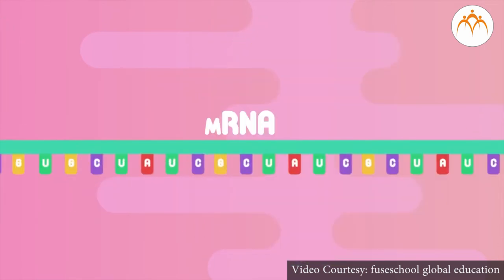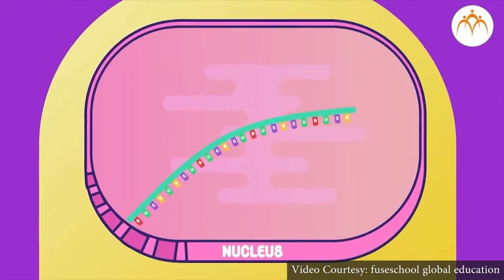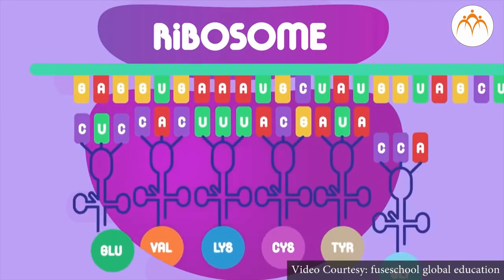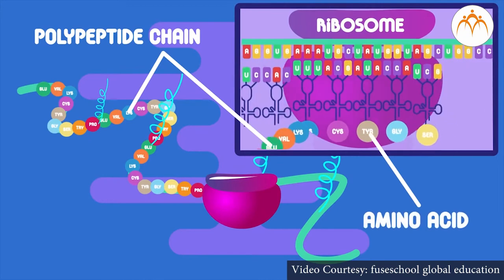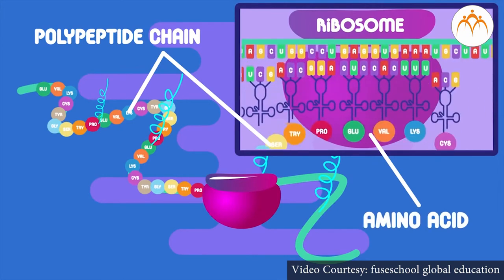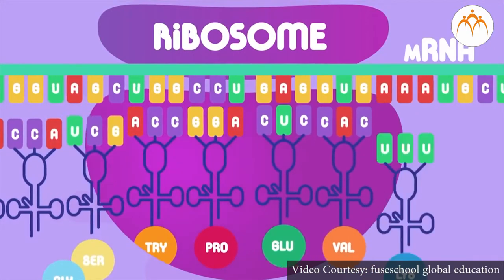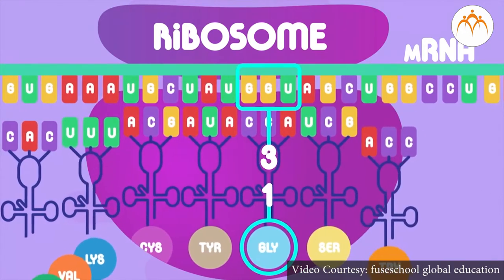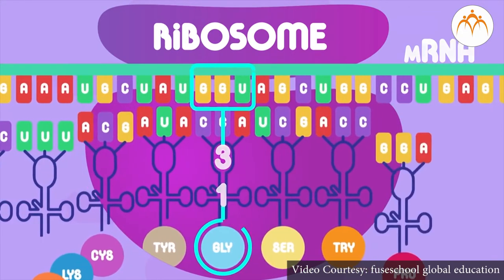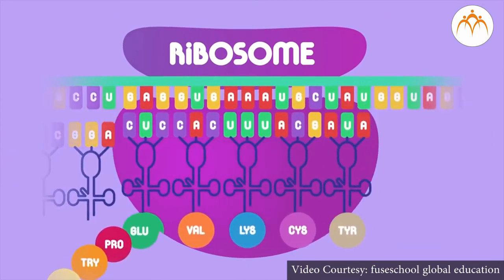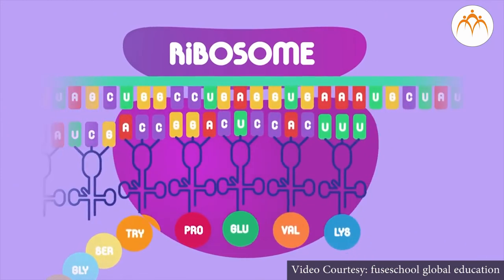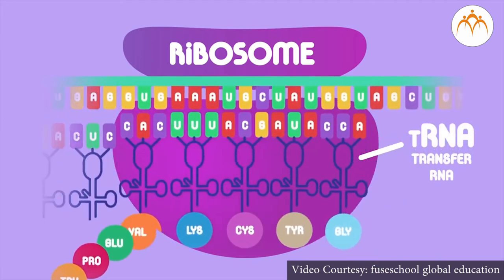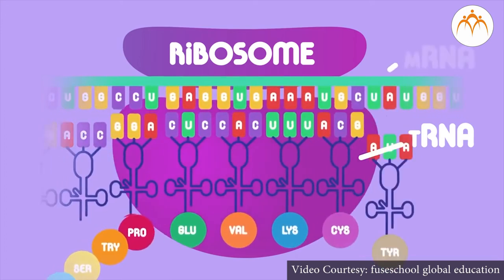The mRNA formed in the nucleus comes into the cytoplasm, bringing the coded message from DNA. The message contains the codes for amino acids, and the code for each amino acid consists of three nucleotides, called a triplet codon. Each mRNA is made up of thousands of triplet codons. As per the message on mRNA, amino acids are supplied by tRNA. For this purpose, tRNA has an anticodon with a complementary sequence to the codon on mRNA.